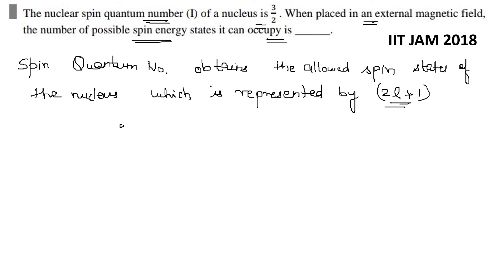The nucleus spin quantum number allowed possible energy state is 2L + 1. So 2 into L, what is the value? 3/2 plus 1. We will calculate this here. This comes out to be 3 + 1, that is 4. So when placed in an external magnetic field, the number of possible spin energy states it can occupy is 4. Answer will be 4. Thank you.